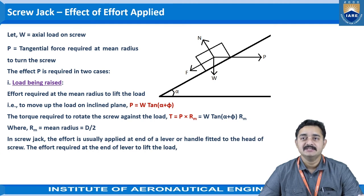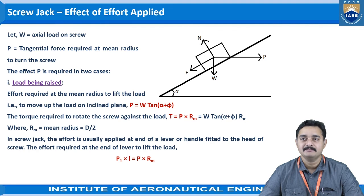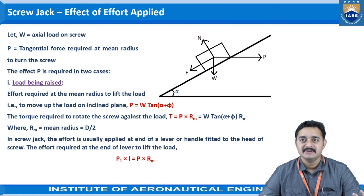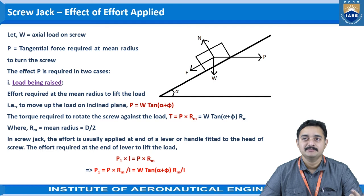In the screw jack, the effort is usually applied at the end of a lever or handle fitted to the head of the screw. The effort required at the end of the lever to lift the load is given by P1·L, where L is the length of the arm and P1 is the effort at the end of the arm — and this equals P·rm. So P1·L = P·rm, and substituting: P1 = P·rm/L = W·tan(α + φ)·rm/L.